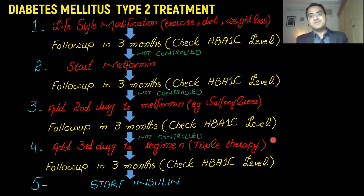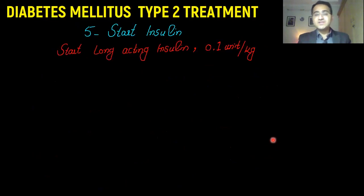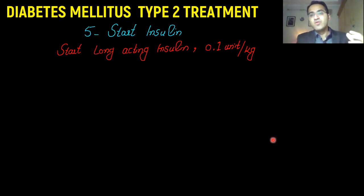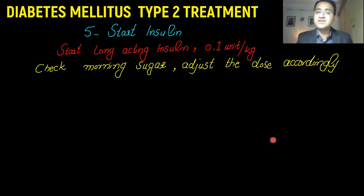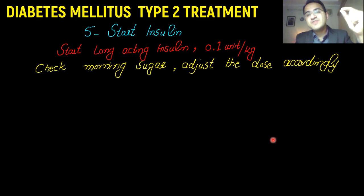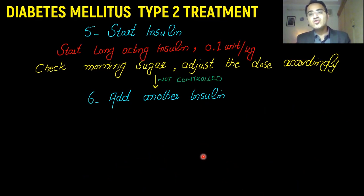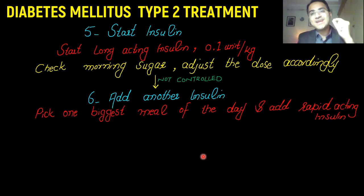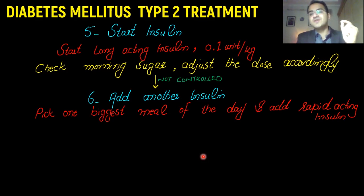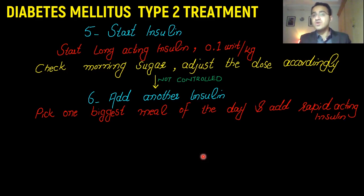When starting insulin, you begin by giving a long-acting insulin at 0.1 unit per kilogram. This long-acting insulin is usually taken at bedtime. You check morning sugar levels; if they are elevated, you increase the dose of insulin accordingly. If sugar levels are still not controlled, you add another insulin — you pick the biggest meal of the day and add a rapid-acting insulin before that meal to control the glucose spike with that big meal.